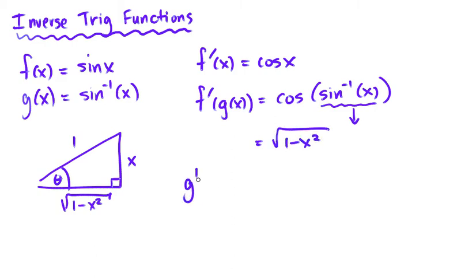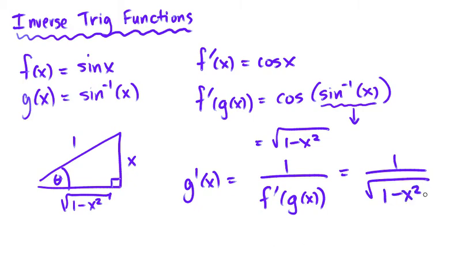And g prime of x is equal to 1 over f prime of g of x. From the equation in the previous section. And I get this.